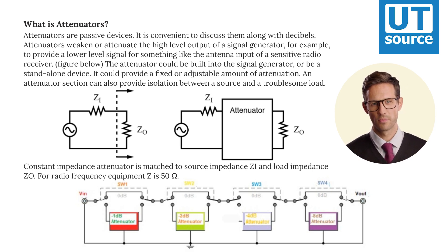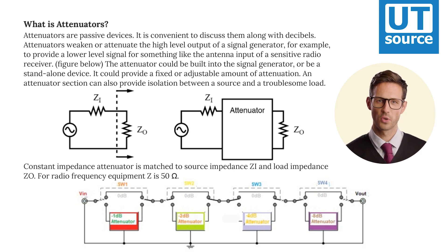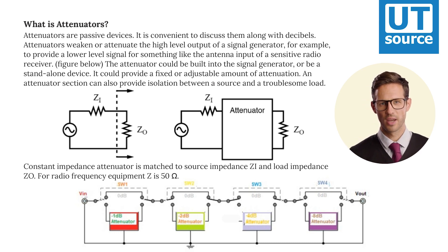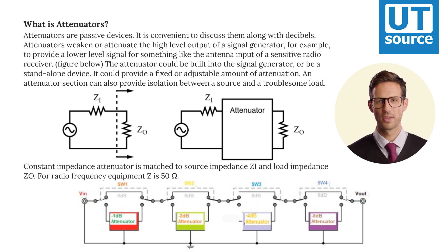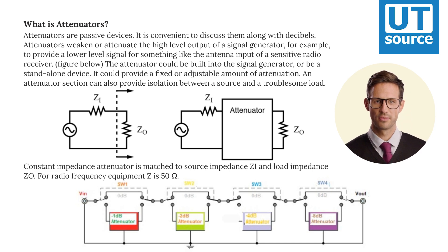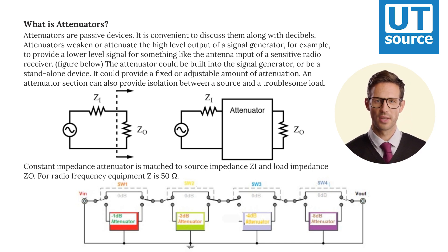The attenuator could be built into the signal generator or be a stand-alone device. It could provide a fixed or adjustable amount of attenuation. An attenuator section can also provide isolation between a source and a troublesome load.